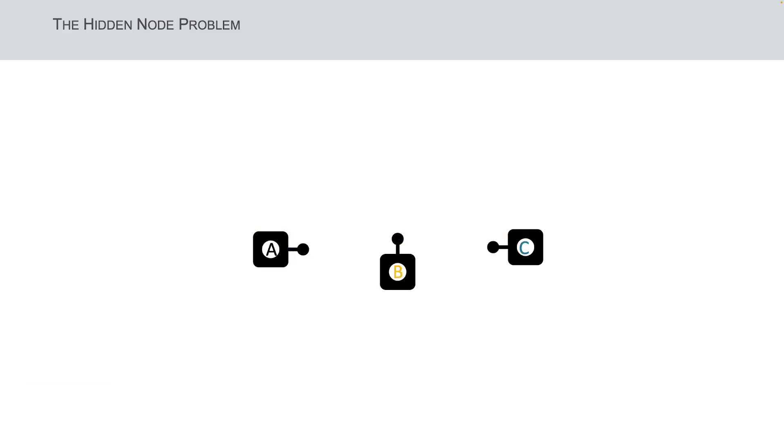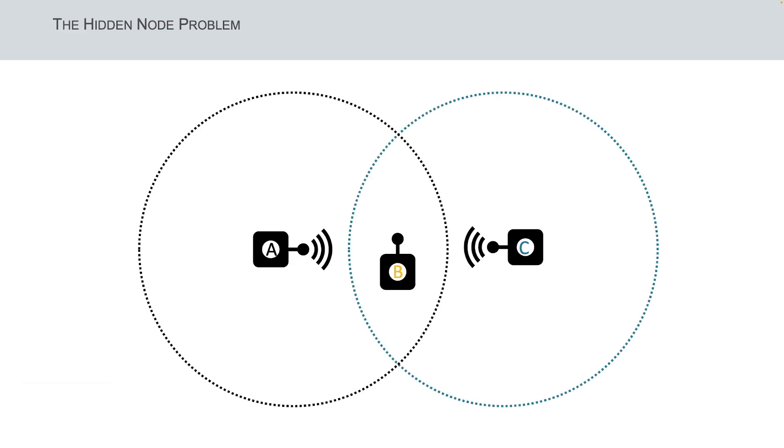Let us assume that there are three nodes, A, B and C. And each node comes with a propagation range that allows them to communicate only with their direct neighbors. More specifically, node A can communicate only with node B. Node C can also communicate only with node B. And finally, node B may communicate both with nodes A and C.